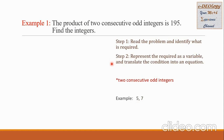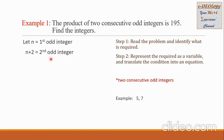In Step 2, we represent the required as a variable and translate the condition into an equation. We let n be the first odd integer and n plus 2 be the second odd integer. If you look at our example of consecutive odd integers, the gap between the first odd integer 5 and the second odd integer 7 is 2. That is why we write n plus 2 to represent the second odd integer.